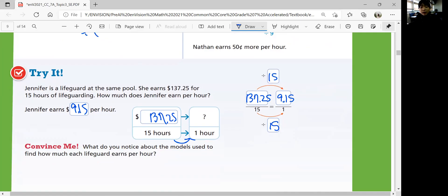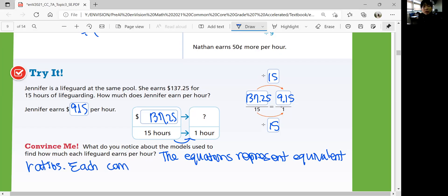What do you notice about the models used to find how much each lifeguard earns per hour? These diagrams represent how to get equivalent ratios, and they're used to represent the earnings of each lifeguard. The equations represent equivalent ratios. Each can be used to represent any rate situation.